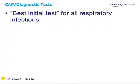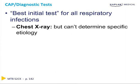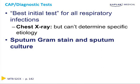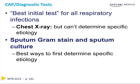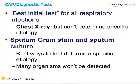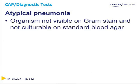In terms of diagnostic tests, the best initial test for all respiratory infections is going to be a chest x-ray. However, this is not very helpful in determining a specific etiology. For that, you need sputum gram stain and sputum culture. The best way to determine the specific etiology is to grow the bug itself. However, many organisms cannot be detected by this method. With regard to the atypical pneumonias, these organisms are typically not seen on gram stain and they're not culturable on standard blood agar.